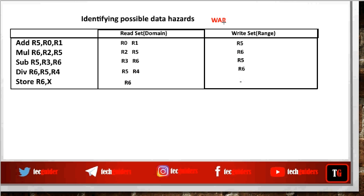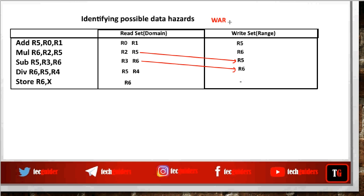To find write after read (WAR) data hazards: a WAR hazard occurs when we are expected to perform a write after a read. Here we write to R6 — is there any prior read? No. Here we write to R5, and there is one prior read. According to program order, we should write to R5 only after the data is read from R5 by the multiplication instruction. Here we write to R6 — is there any prior read? Yes. We are expected to write to R6 by the div instruction only after data is read from R6 by the sub instruction. Hence there are two possible WAR data hazards.